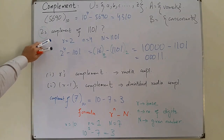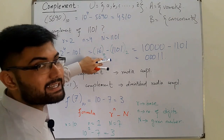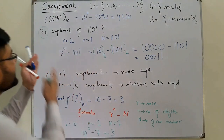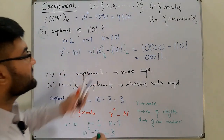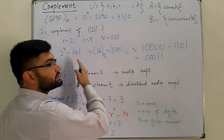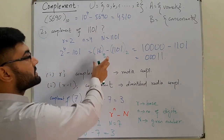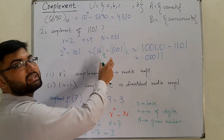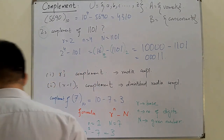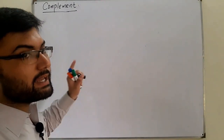Whatever complement you need, you have to convert the base-10 value into that base. For example, here we needed the two's complement so we converted base 10 into base 2. If we needed the 8's complement, we would convert base 10 into base 8.